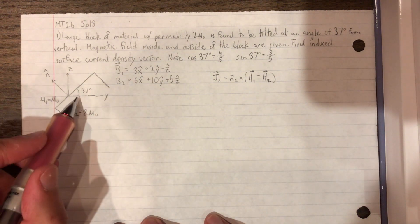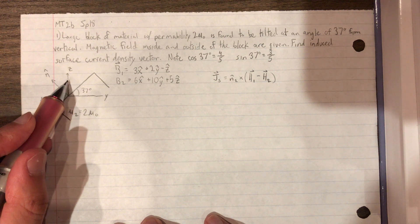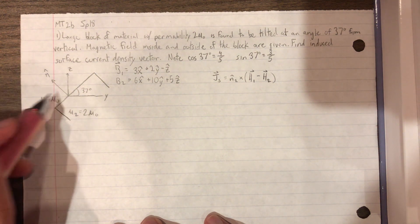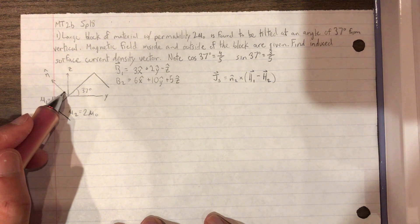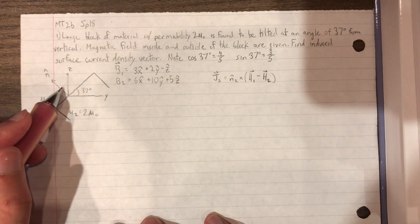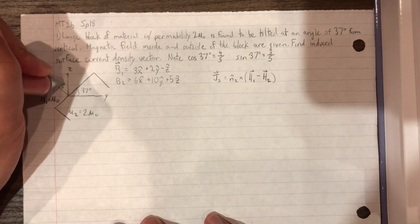And then seeing that this is 37, and this would make it 90, that this angle is going to be 90 minus 37. So then that means when this is perpendicular, this angle is going to be also 37 degrees.